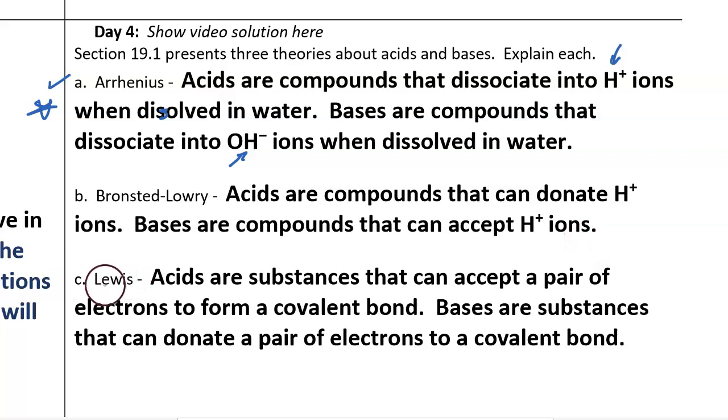And C, what's the Lewis Theory of Acids? Well, the scientist whose name was Lewis states, acids are substances that can accept a pair of electrons to form a covalent bond. Bases are substances that can donate a pair of electrons to form a covalent bond.